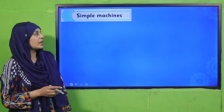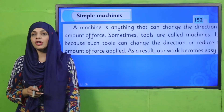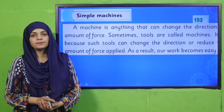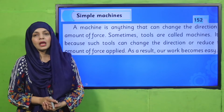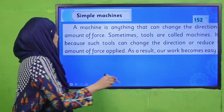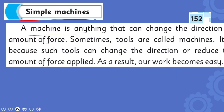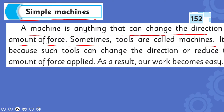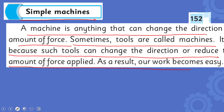For reading, quickly open page number 152 in your GK3 Pro. I hope everybody has opened the page. Now let's start the reading: 'A simple machine is anything that can change the direction or amount of force. Sometimes tools are called machines because such tools can change the direction or reduce the amount of force applied. As a result, our work becomes easy.'